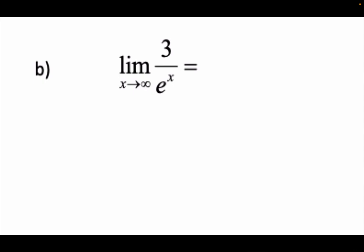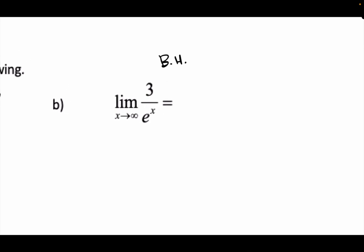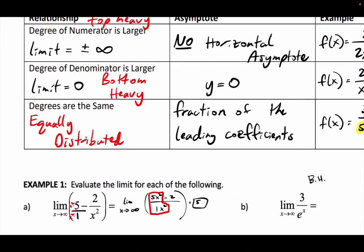Example b: 3 over e to the x. The top is a constant — it's always 3. The bottom: where is the variable? It's up top in the exponent — that's exponential. What grows faster, a constant or an exponential? The exponential grows a lot faster. The top isn't even going to grow. So it's extremely bottom-heavy. Bottom-heavy means the limit is zero.